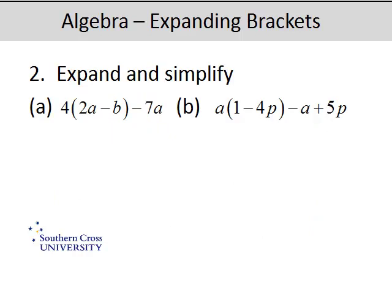So now we're just going up a little more difficult in complexity. So we need to expand these brackets here and then see if there's any like terms. So 4 lots of 2a is 8a, take away 4 lots of b is 4b, take 7a.